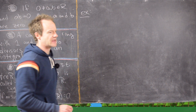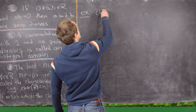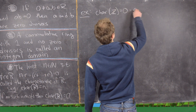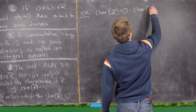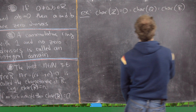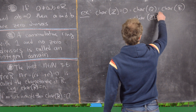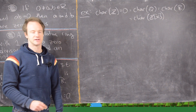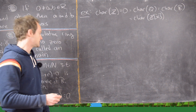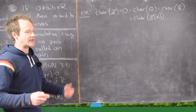Familiar things from previous courses generally have characteristic zero. The characteristic of Z is equal to zero, and that's the same as the characteristic of Q, the characteristic of R, the complex numbers. It's also the characteristic of a polynomial ring like Z[x], and so on. Why is that true? Because if you keep adding an integer to itself, you'll never end up back at zero.